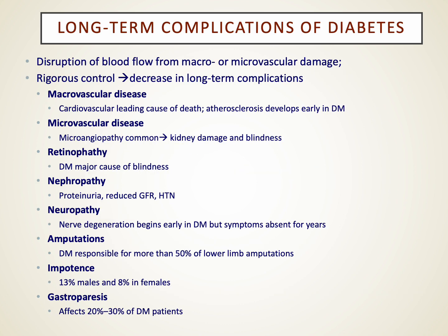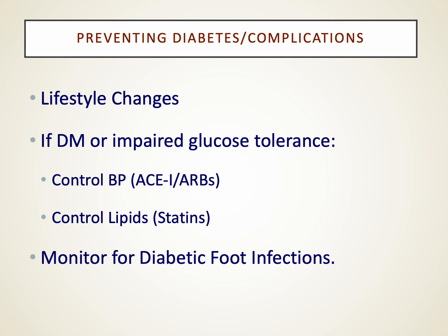Our long-term complications we're trying to avoid include retinopathies, neuropathies, nephropathies, amputation risk, and other complications associated with diabetes. Lifestyle is a mainstay of therapy for all patients at risk for or with diabetes, focusing on diet and exercise. We're also aggressive with cardiovascular risks — managing blood pressure with an ACE or ARB, controlling lipids with a statin, and providing adequate glycemic control to reduce the risk for all these complications.